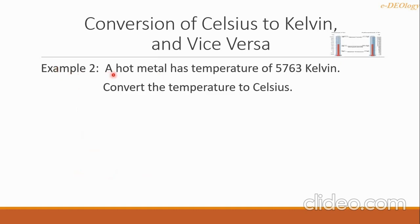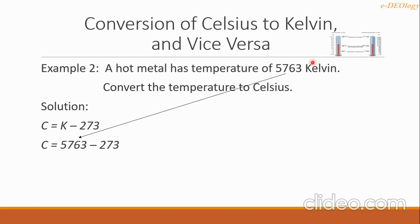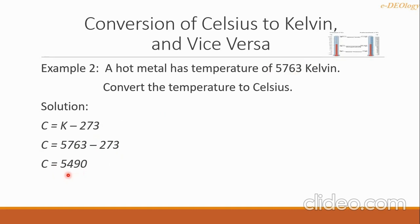Example two: a hot metal has a temperature of 5,763 Kelvin — convert the temperature to Celsius. Our solution uses C equals K minus 273. We substitute 5,763 for K, then subtract the constant 273. The final answer is 5,490 degrees Celsius. So 5,763 Kelvin equals 5,490 degrees Celsius.